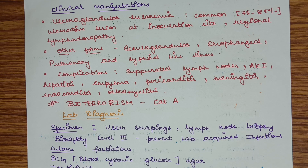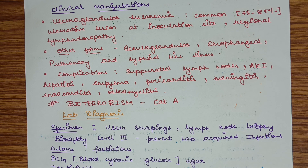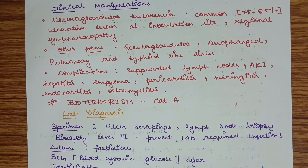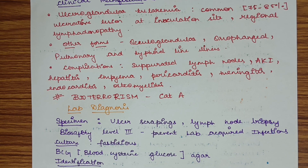The complications include suppurative lymph nodes, acute kidney injury, hepatitis, empyema, pericarditis, meningitis, endocarditis, and osteomyelitis — essentially all organs can be affected. Tularemia is also classified as a bioterrorism Category A agent.